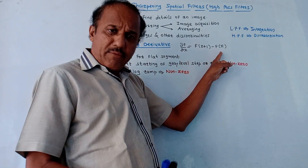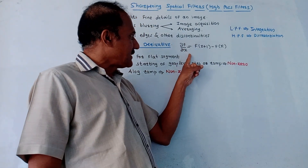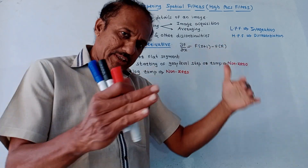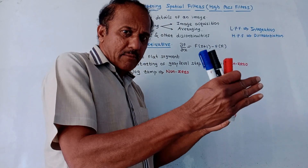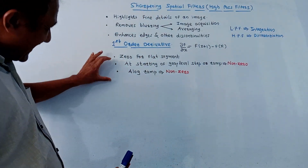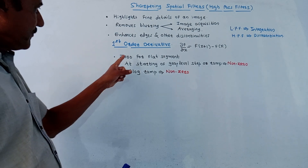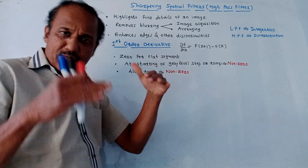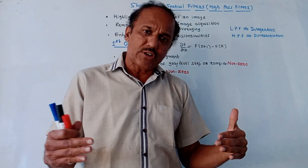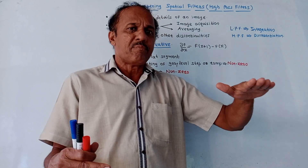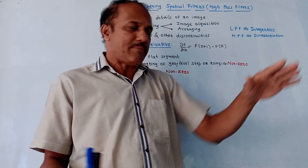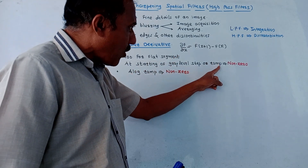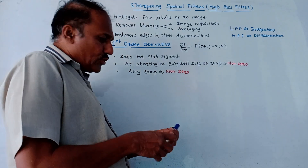The normal definition of first order derivative is: ∂f/∂x = f(x+1) − f(x), meaning we are taking differences between two adjacent pixels. Some characteristics of first order derivative: first, it is zero for a flat segment. In image processing, a flat segment means that for a certain number of pixels the gray level remains the same.